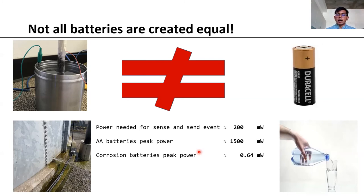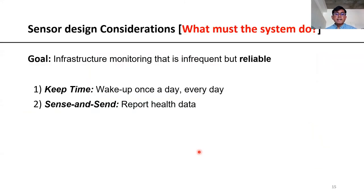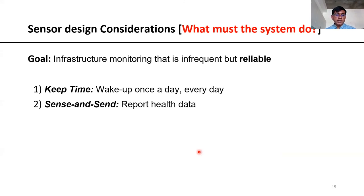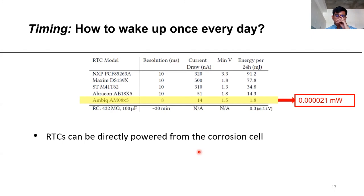The power we typically need to carry out any sensing event is much higher than the power available to us — that's one of the major challenges. Our system must carry out a periodic, once-a-day measurement of the cathodic protection system health and send it over. This granularity is fine because corrosion is a very slow, gradual process and not much changes from day to day, but we still want to reliably know that nothing has changed. To do so, we need to: first, keep track of our system and wake up once a day to carry out sensing, and second, report health data back to the user.